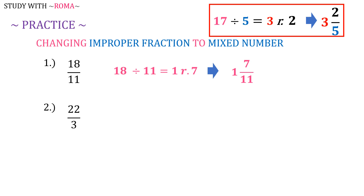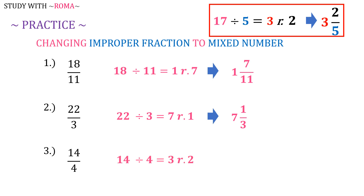Number 2: 22 over 3. 22 divided by 3 is equal to 7 remainder 1. So 22 over 3 is equal to 7 and 1 third. Number 3: 14 over 4. 14 divided by 4 is equal to 3 remainder 2. So 14 over 4 is equal to 3 and 2 fourths. Remember to always simplify your answer. So 14 over 4 is equal to 3 and 1 half.